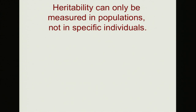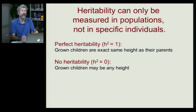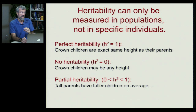Heritability is actually an abstraction. No one can say whether your behavior is due to your genes specifically, but we can say that people who have your genes might on average behave in a certain way with a certain probability. So we measure heritability in populations rather than specific individuals. If offspring are behaviorally exactly the same as their parents, they would have perfect heritability. If height was perfectly determined by genetics, offspring would be exactly the same height as their parents. If there's no heritability, any two parents would have children of any height — no correlation. Most traits show partial heritability.